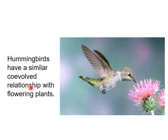Hummingbirds have a similar co-evolutionary relationship with plants. One particularly striking example of co-evolution between a hummingbird and a flowering plant occurs in the tropics. Ensifera is a hummingbird with an extremely long bill in excess of 8 cm. It feeds almost exclusively on passion flowers, which store their nectar deep within tubular flowers. The structure of the flower excludes virtually all other nectar-feeding animals, limiting competition for the hummingbird and reducing the chances of cross-pollination with other plant species.